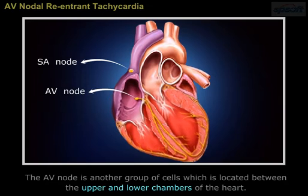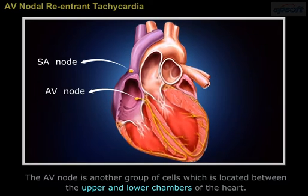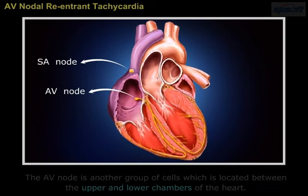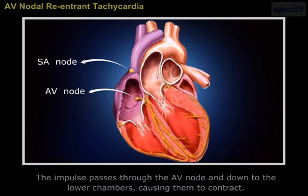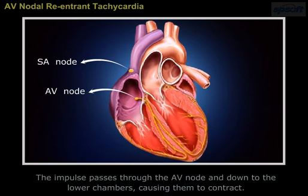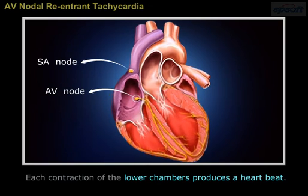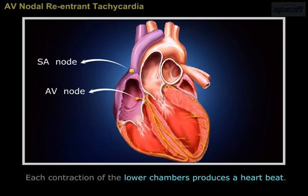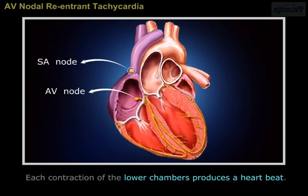The AV node is another group of cells located between the upper and lower chambers of the heart. The impulse passes through the AV node and down to the lower chambers, causing them to contract. Each contraction of the lower chambers produces a heartbeat.